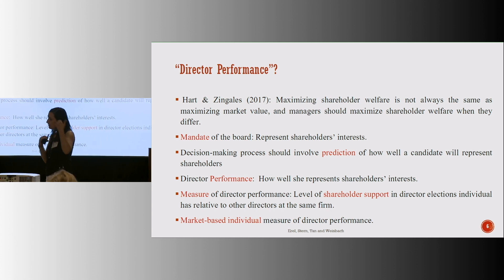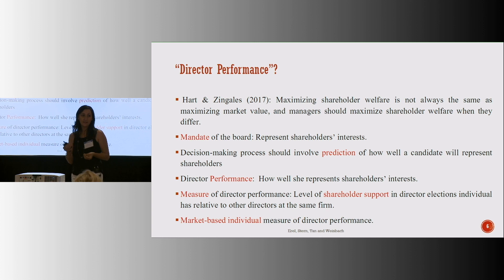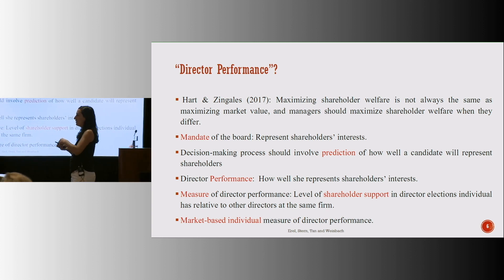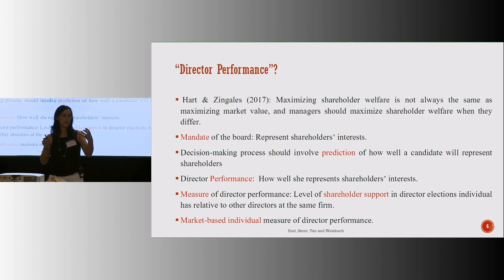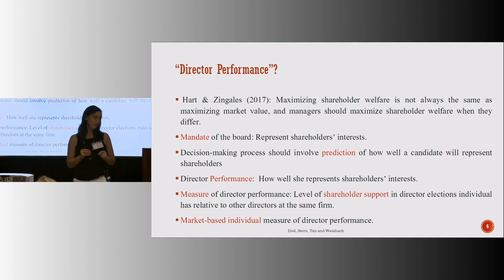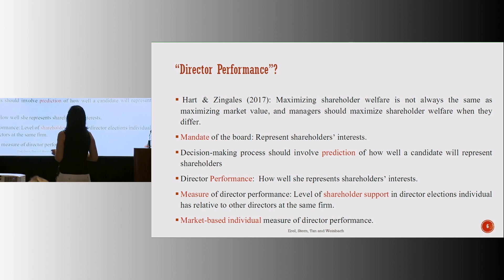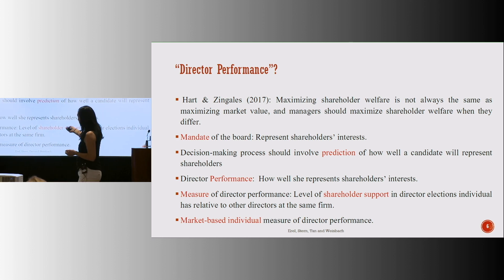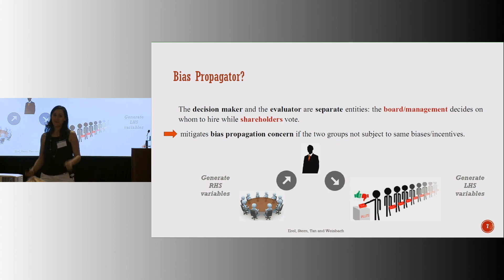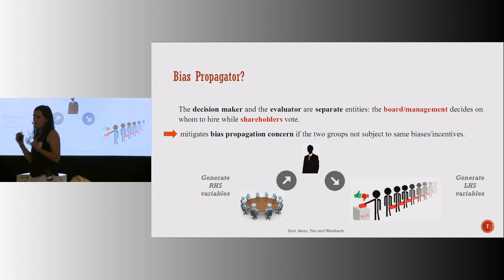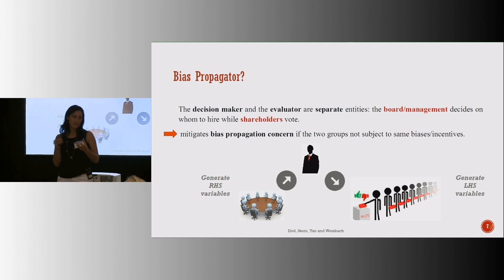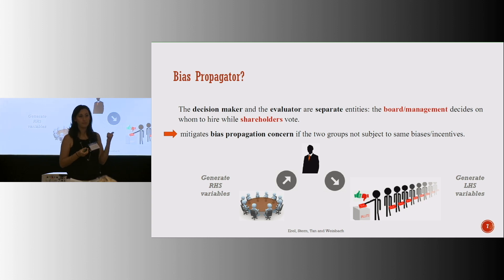In the paper, we detail why we think the measure that we use is a really good measure. The bottom line is that we use shareholder votes — how happy shareholders are going to be about a specific director is the metric that we use to evaluate them. We go at length in the paper as to why this is an interesting metric. One of the reasons is that it creates a setup that helps mitigate the concern of the algorithm being a bias propagator.